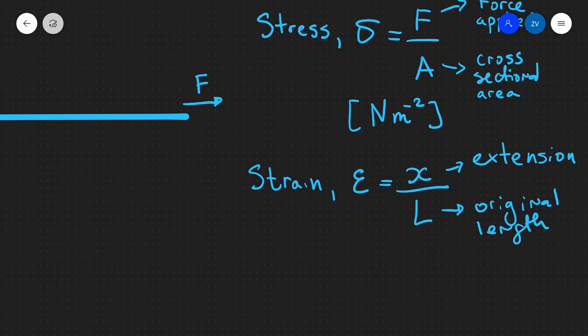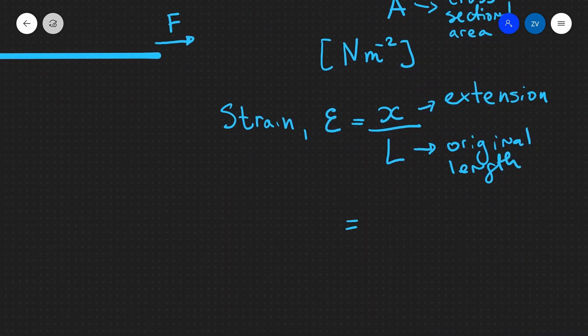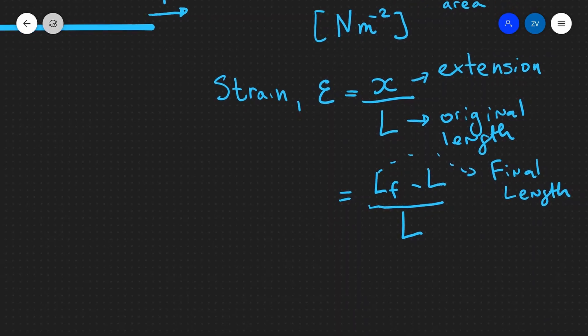Because your extension is your final length minus the original length, we could also write this as L_f (final length) minus L, divided by the original length. Notice something here: the units on top are length minus length (meters), and the units on the bottom are also meters. So strain actually has no units—it's a unitless quantity, which is just a number.